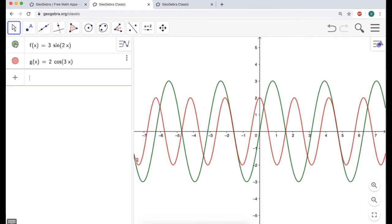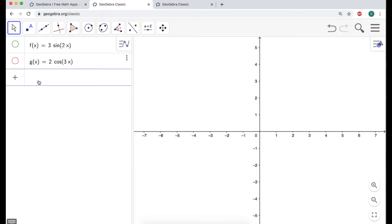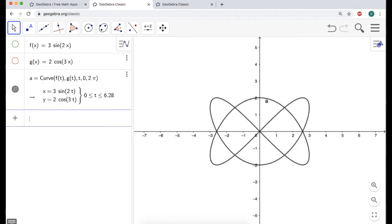g of x, let's say, is 2 cosine of 3x. I don't really want to see these. What I want to see is the curve that I get if I combine them. So I'm going to use curve, and I'm going to say f of t, g of t, and let's let t go from 0 to 2 pi, and we get this.